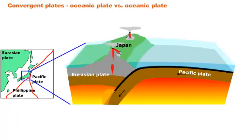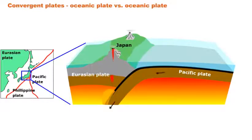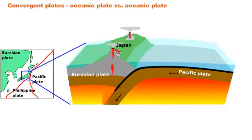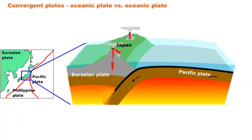The map on the left shows that Japan is situated close to the boundaries between three lithospheric plates. The figure on the right shows a cross-section through the crust in that region. The Pacific plate is subducted — moves below — the Eurasian plate. In this area, both plates are oceanic plates, so this is an oceanic versus oceanic plate boundary.